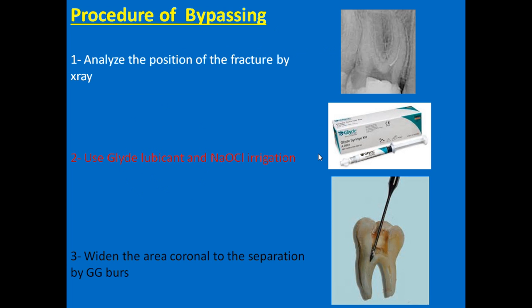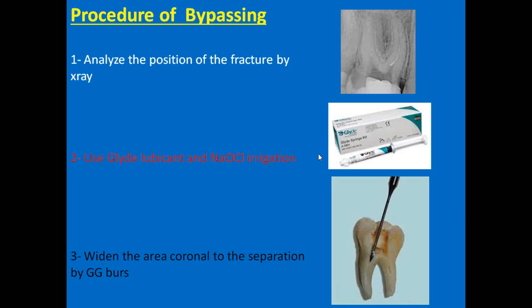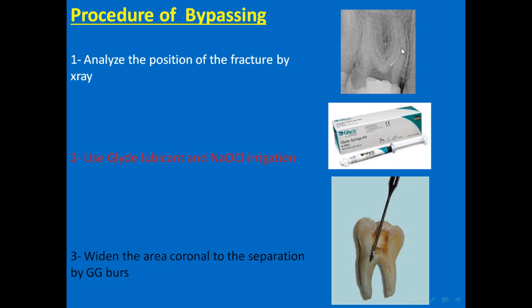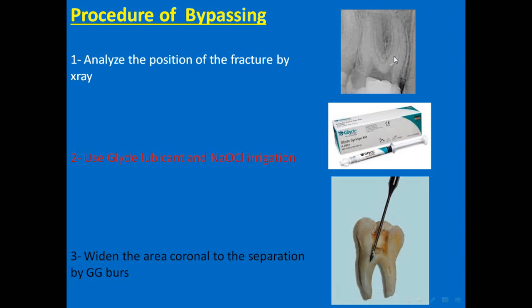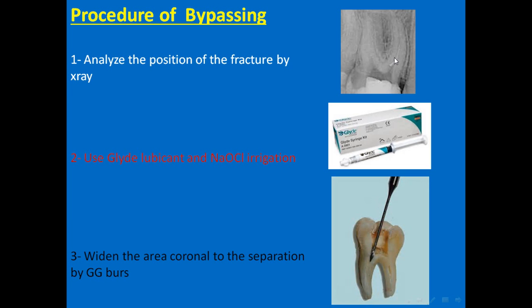The procedure for bypassing: first of all, we have to analyze the position of the fracture by X-ray. It is essential to see where the fracture is, whether it is entangled a lot with the dentine, whether there are spaces, and whether there is a loose end or tip. All these are very important to understand.